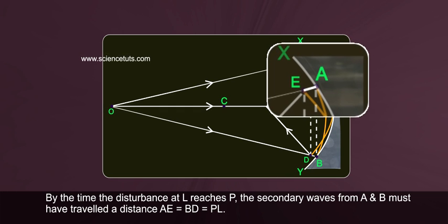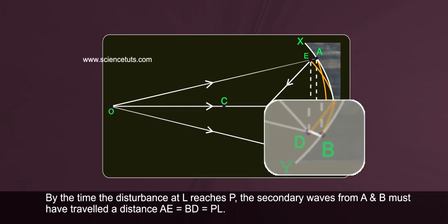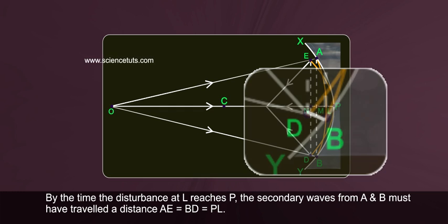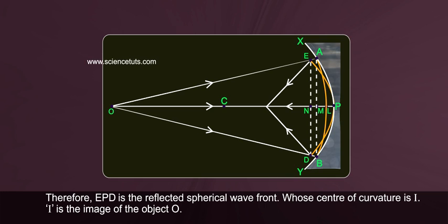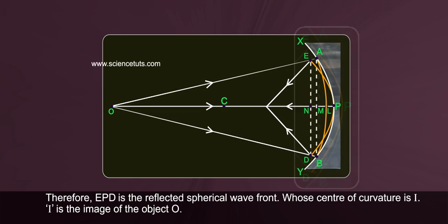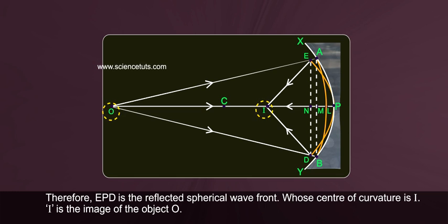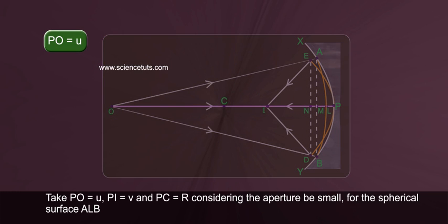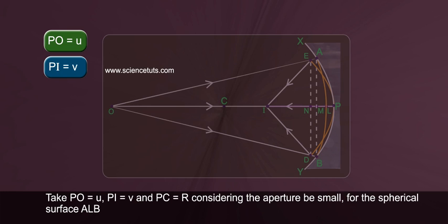By the time the disturbance at L reaches B, the secondary waves from A and B must have travelled a distance AE equals BD equals PL. Therefore, EPD is the reflected spherical wave front whose center of curvature is I. I is the image of the object O. Take PO equals U, PI equals V, PC equals R. Considering the aperture to be small.